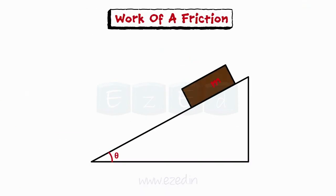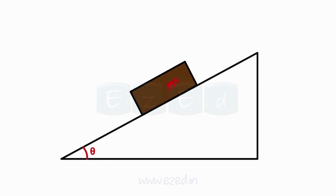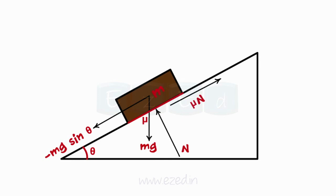How is work done by friction? Consider a block of mass m sliding on an inclined plane covering distance s. If mu is the coefficient of static and kinetic friction, then the motion of the block is resisted by the frictional force mu N. Therefore, work done by friction force is given by the following equation.